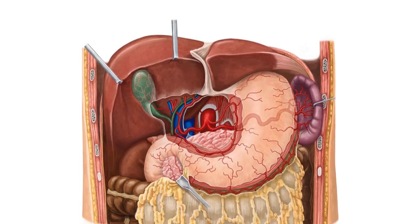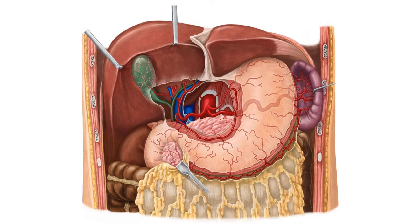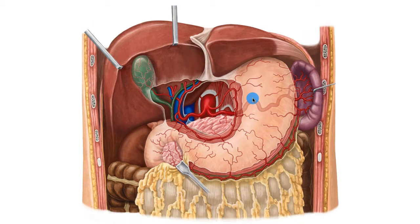In the following image we can see an anterior view of the abdominal cavity. Here we can see the right lobe of the liver, the left lobe of the liver, the gallbladder, the stomach and the spleen.